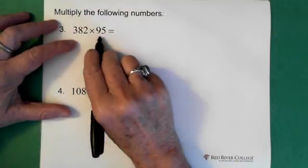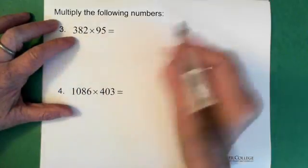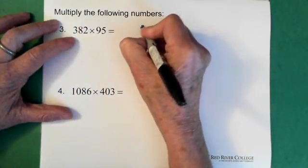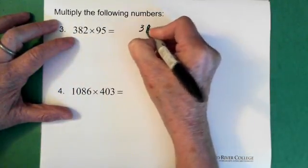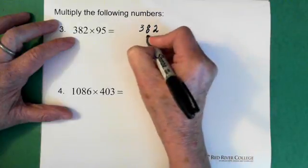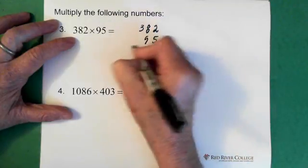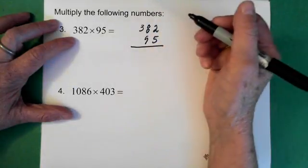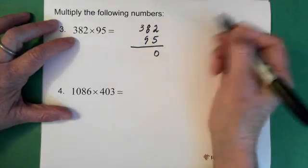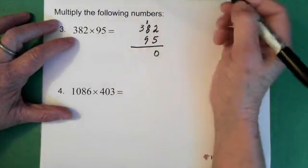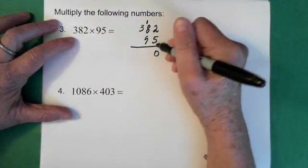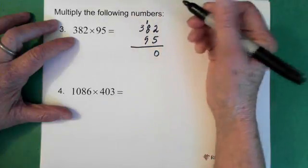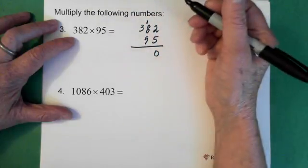So 382 times 95. Now we're getting into big numbers which is always frustrating sometimes. So 382 times 95. So 5 times 2 is 10. So the 0 goes down here and the 1 goes above the 8.